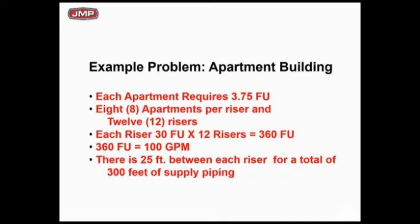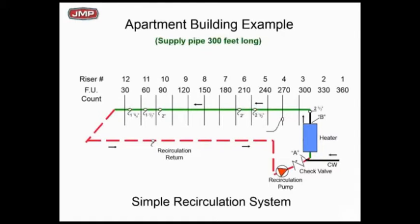Here we go with a typical fixture unit count for sizing pipe and coming up with demand, flow, and GPM. Note the bottom statement: we're going to have 12 risers, 25 feet apart. The total supply pipe length in the building is going to be 300 feet. Here's a little picture of this apartment with one water heater shown in blue and the green is the domestic hot water supply pipe, with each takeoff 25 feet apart.